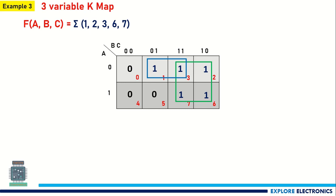So I am grouping the leftover cell 1 with cell 3. This is allowed — we can consider a cell for multiple groups. Now writing the expression: for the first 2-variable group corresponding to cells 1 and 3, A is 0 so it is Ā. B is changing from 0 to 1, so neglect B. C is 1 itself. So Ā·C is the expression for this group.